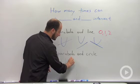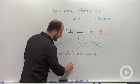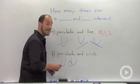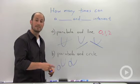You could also, by the same logic that we did before, have a circle that is tangent to the parabola. So that's going to be one intersection.